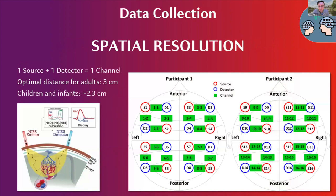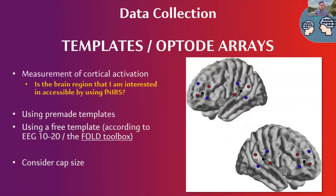Regarding spatial resolution, we usually have about 20 to 30 channels, but these days you can ramp up quite considerably to 50 or 60 channels. We have to ensure channels are about three centimeters apart — for children and infants it's a little less. This means we have to carefully decide on our montage, template, and optode arrangement, as not all arrangements that might be theoretically desired are actually practically possible given how sources and detectors need to be arranged.